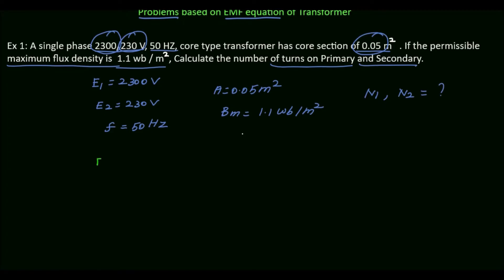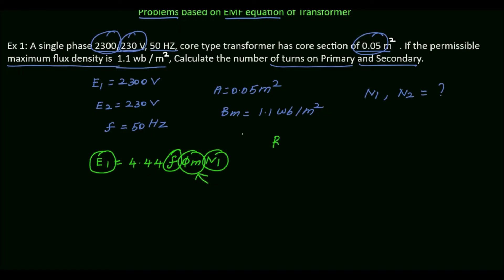The EMF induced on the primary side of the transformer is given by E1 = 4.44 × F × φM × N1. We know E1 and F, and we need to calculate N1. To do that, we first need to find the maximum flux φM. We know that maximum flux density equals maximum flux per unit area.